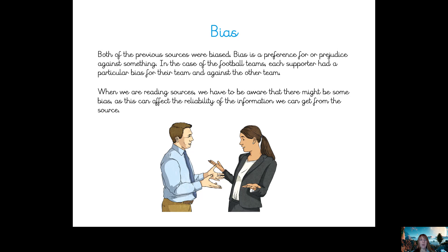When we're reading sources, we have to be aware that there might be some bias, as this can affect the reliability of the information we get from the source. For example, a diary entry from a soldier at war — depending on whether his country wins the war or not, he and a soldier from the other side will have a very different account of that historical event.